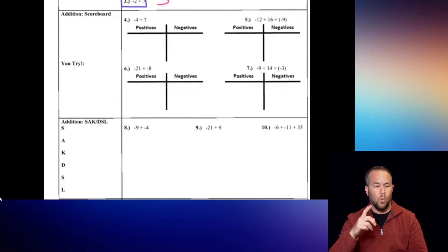For a more challenging example: negative 12 gives the negatives 12 points, positive 16 gives the positives 16 points, then the negatives score 9 more. Adding the negatives' totals: 12 plus 9 equals 21. So the final score is positives 16, negatives 21. The negatives won, and 21 minus 16 equals 5, so our final answer is negative 5. Note that for question 4, since positives won, we just wrote 3 with no plus sign.